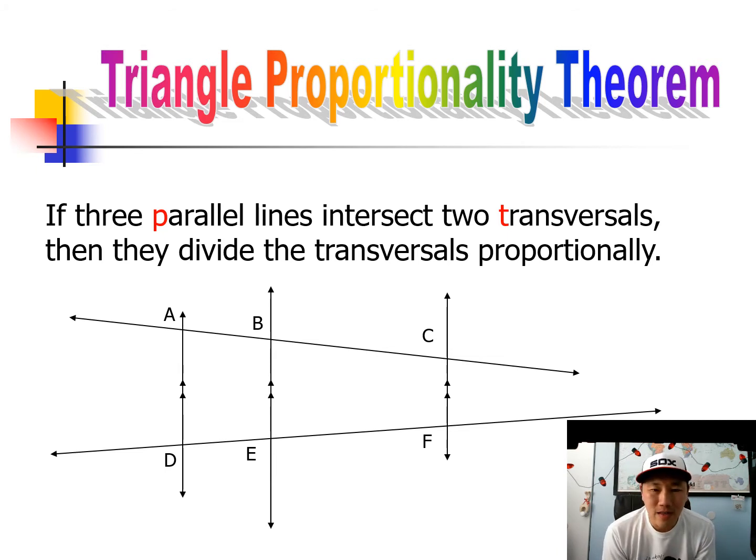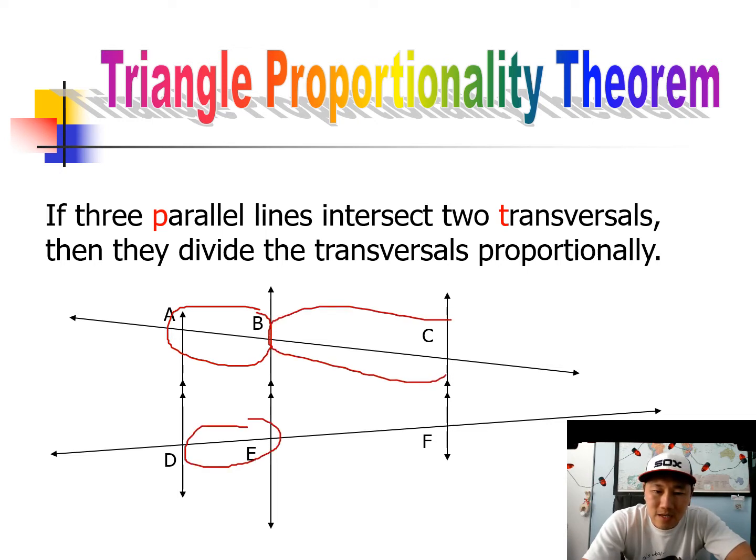If three parallel lines intersect two transversals, then they divide the transversals proportionally. So we have three parallel lines and then there's two transversals going through them. Then all of these little segments are proportional, like this segment is proportional to that segment, so we got some proportionality stuff going on.